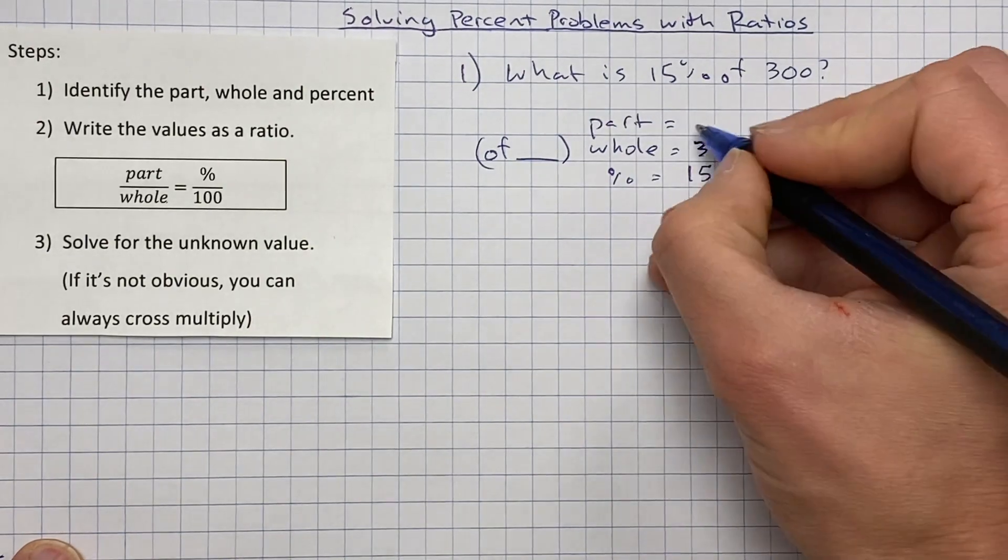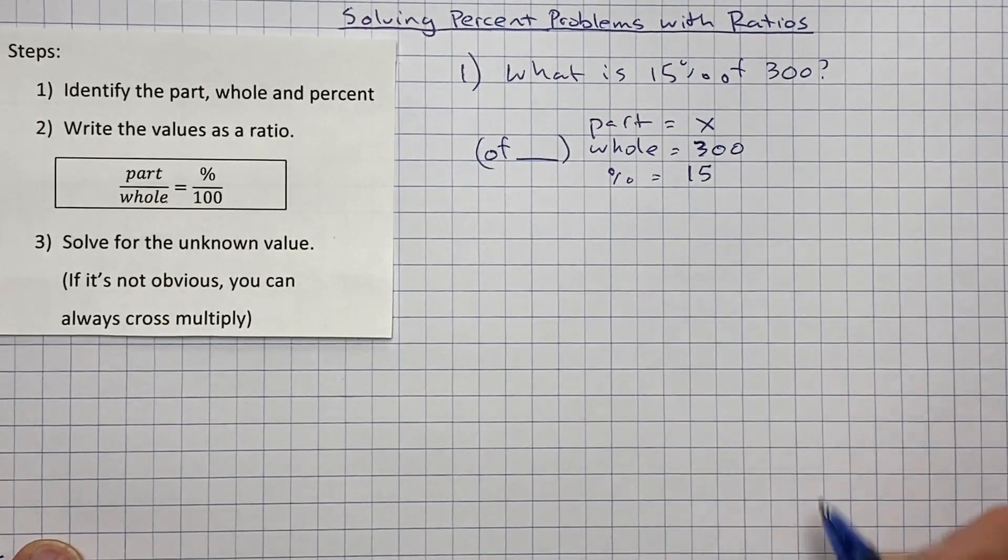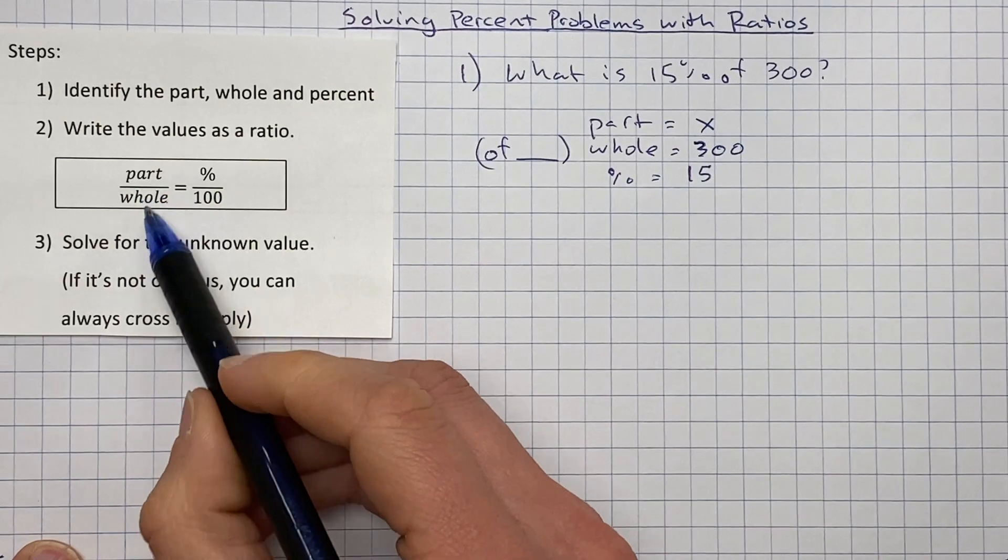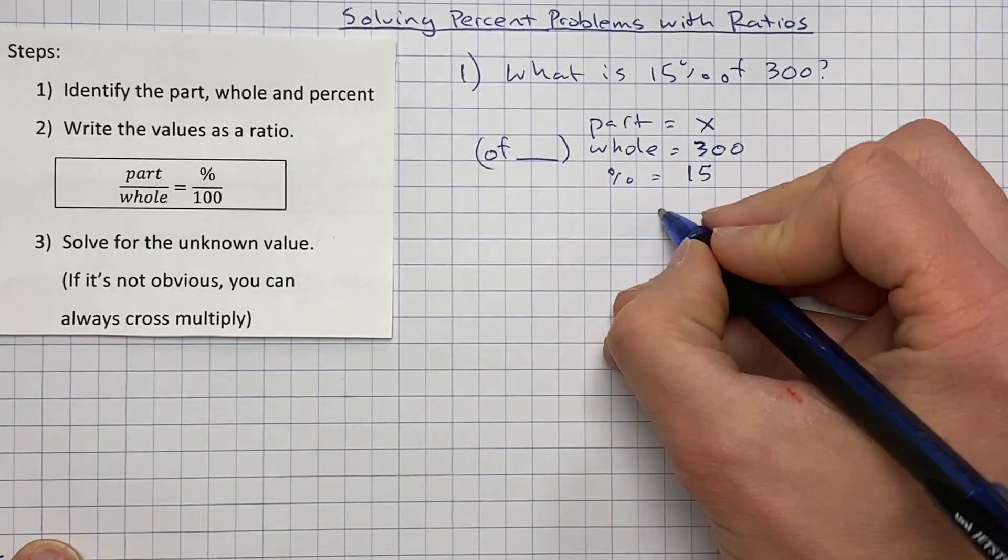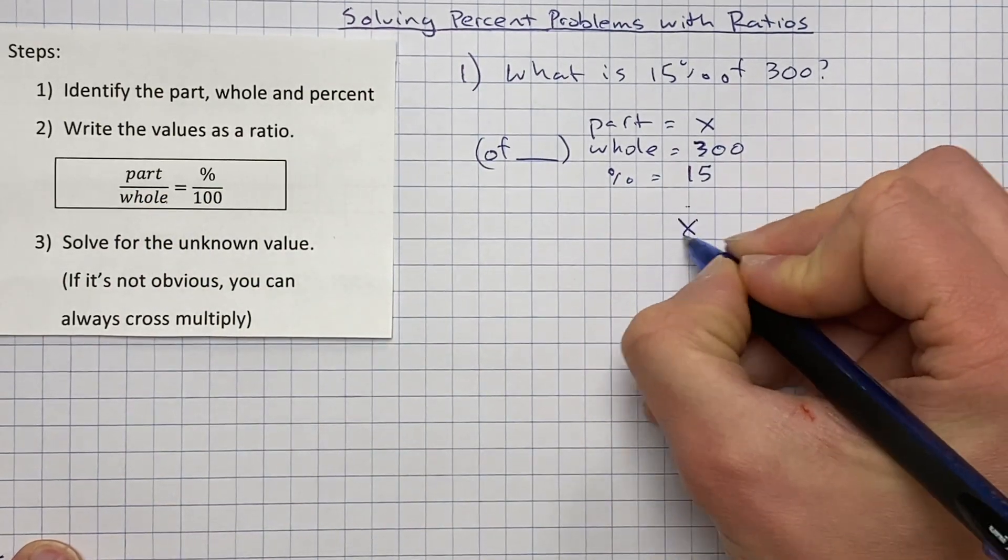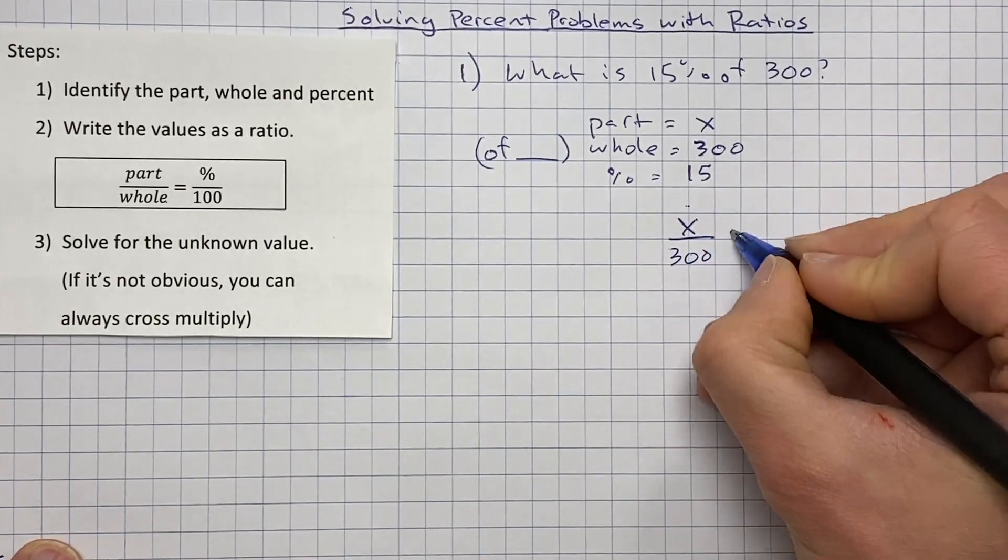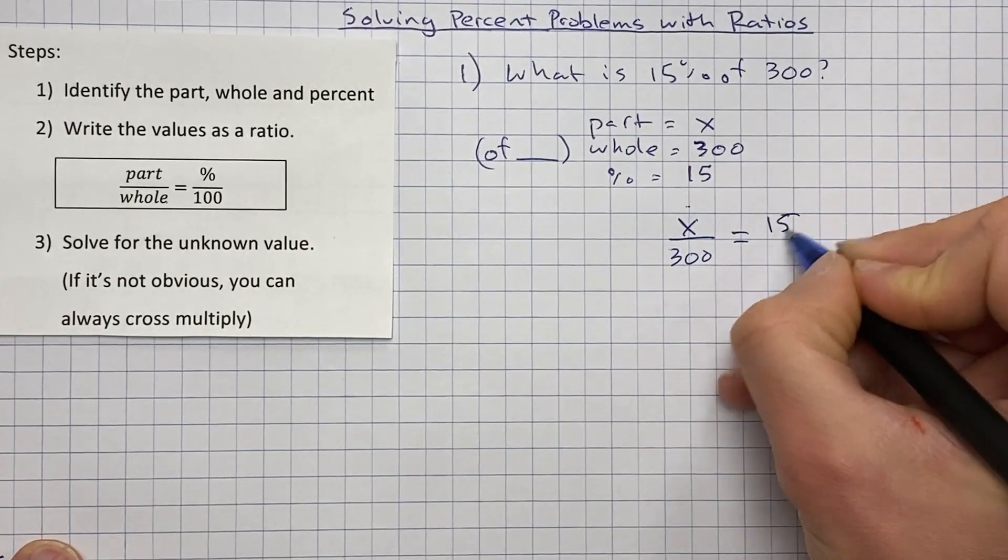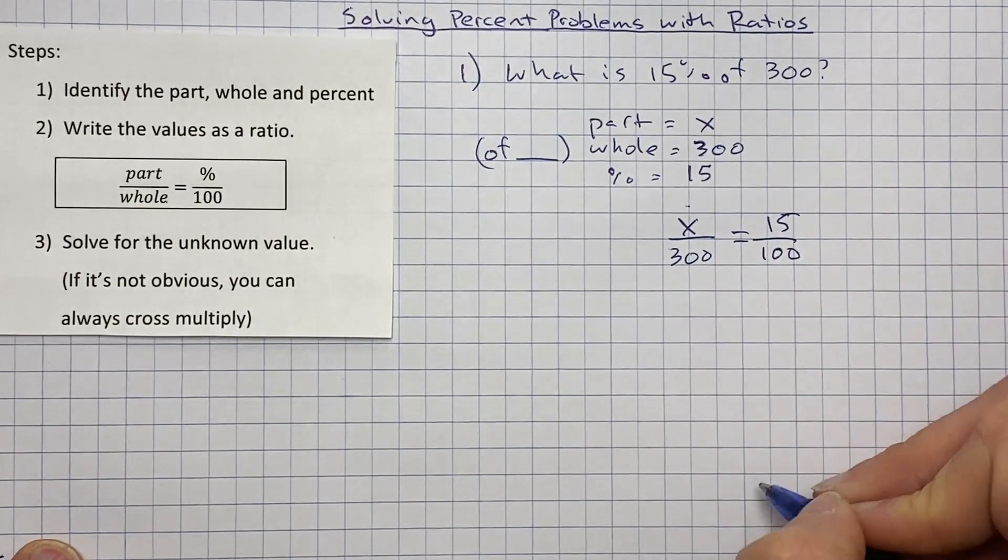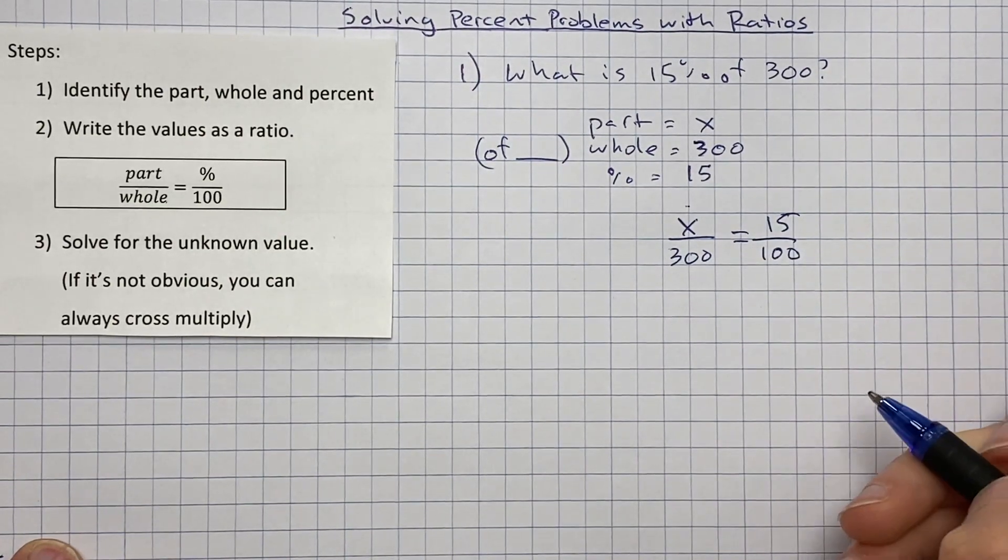So now we're going to put that into that ratio right here. Part over whole equals percent over 100. So we're going to put x over 300, because that's our part and our whole, equals, our percent is 15, and 100 always goes down there on the bottom. Now it's a matter of solving the equation.